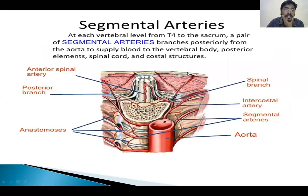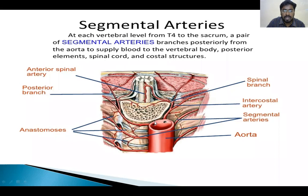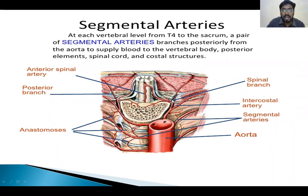What is the arterial supply of the vertebrae? This is the abdominal aorta. From the posterior aspect, we can see the segmental arteries, which branch as anterior and posterior spinal arteries and intercostal arteries. They anastomose with each other and give vascular supply to the vertebral body and the spinal cord.